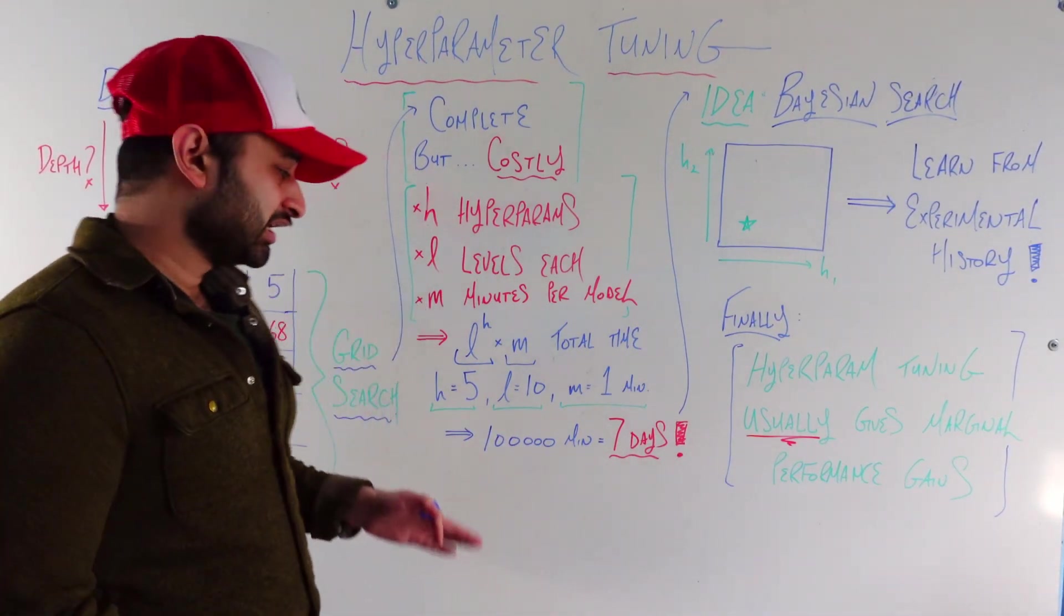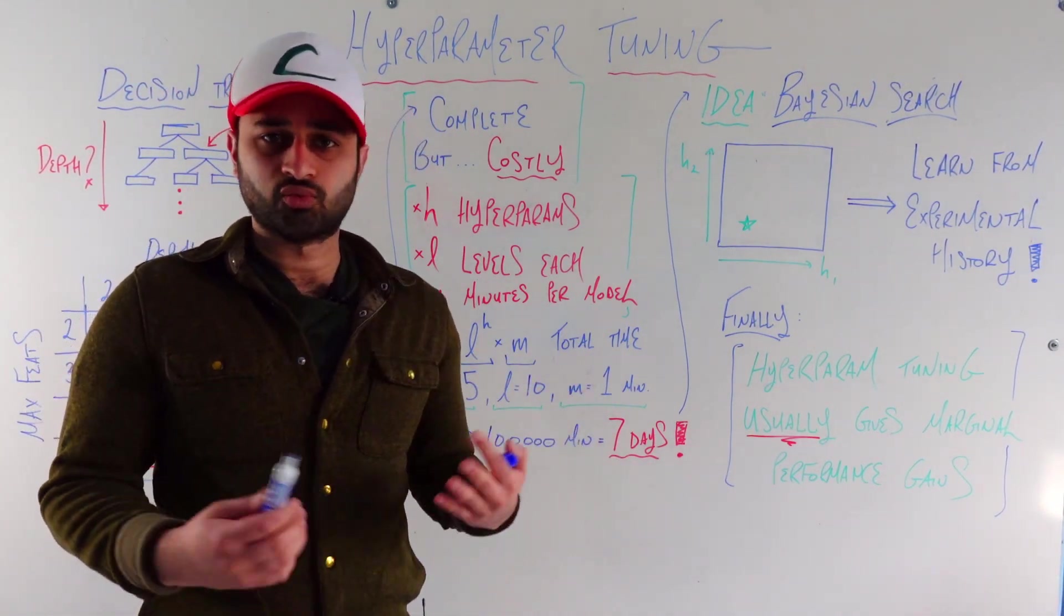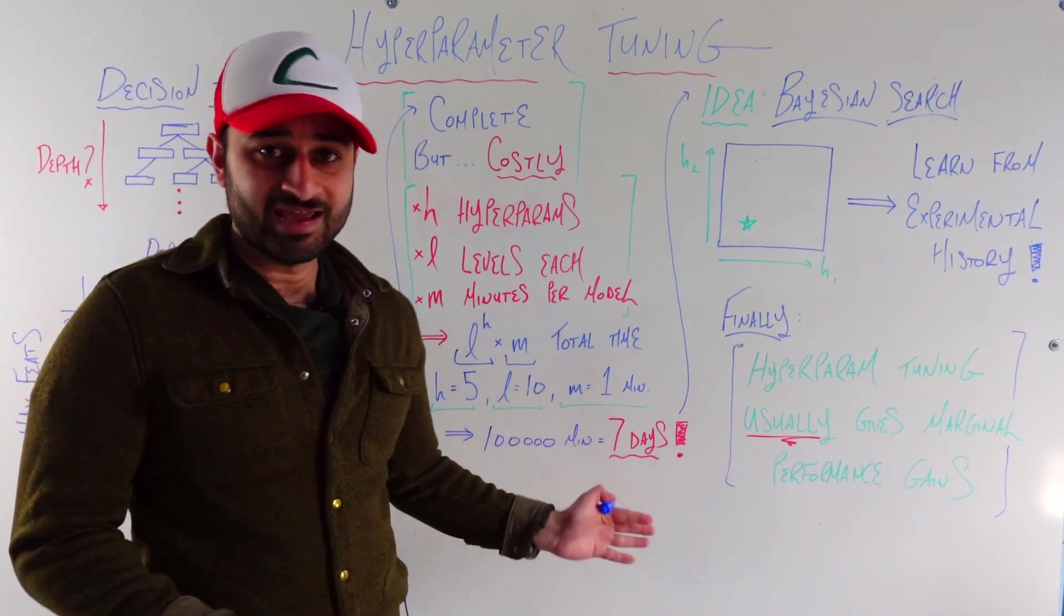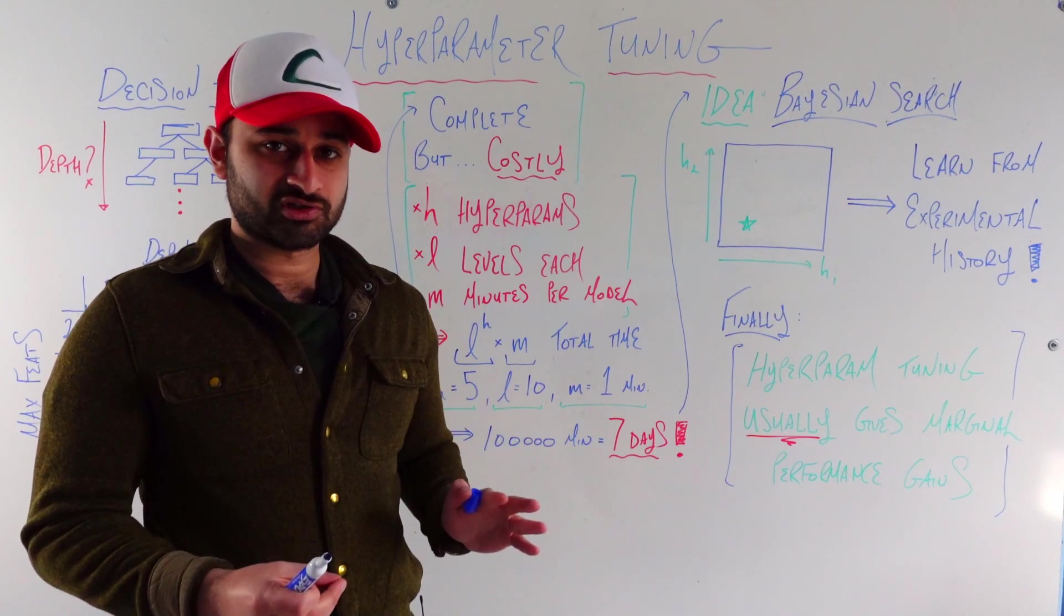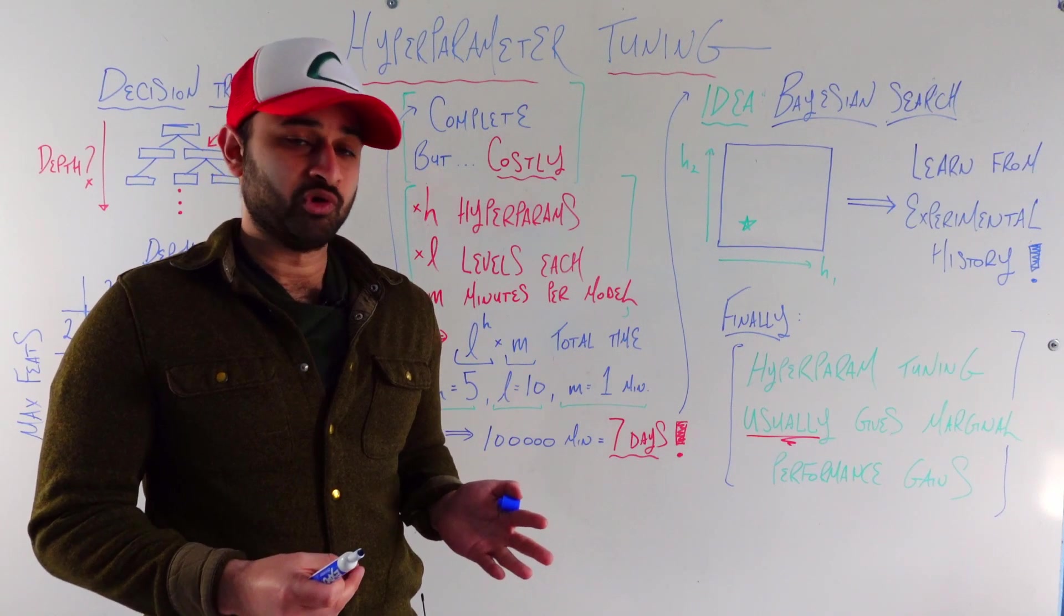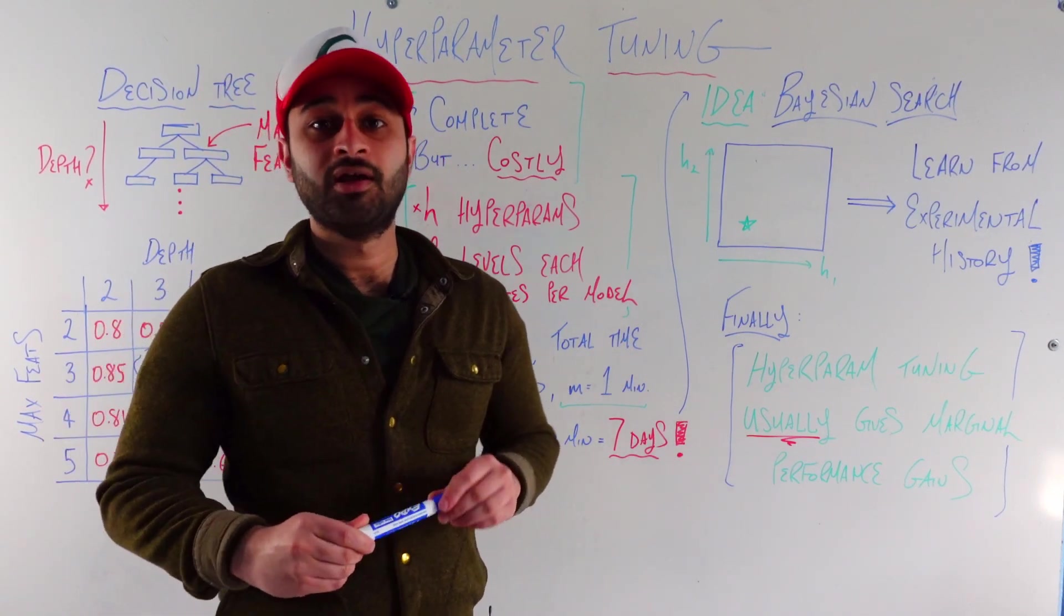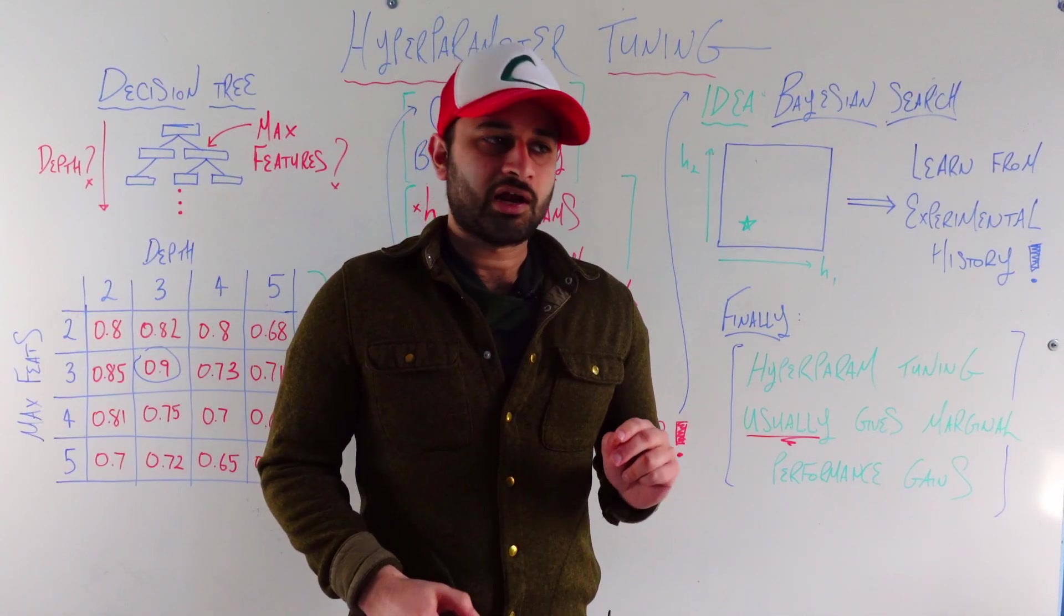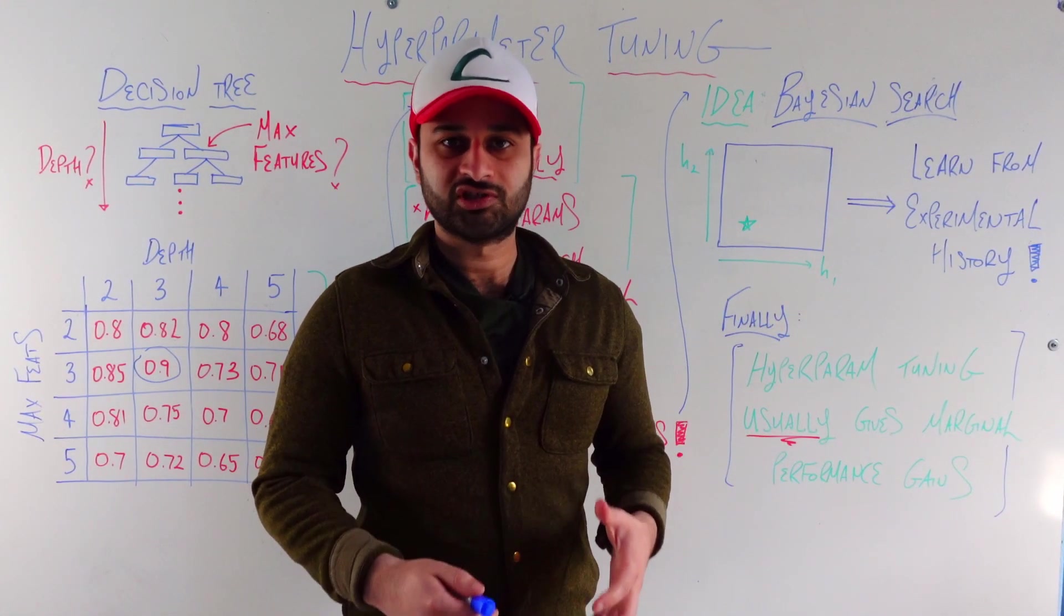Let's put in some real numbers. Let's say we have 5 hyperparameters, 10 levels each, and each model just takes 1 minute to train. The total amount of time, if you multiply that out, is going to be 7 days worth of computing time. So you're sitting there waiting a week to get the results. And let's say you figure out in the middle of that you made some kind of mistake, boom, got to start over. So this is obviously not the best way to go about hyperparameter tuning. And so let's talk about a smarter method, and that also allows us to bring in some different places of stats, specifically Bayesian statistics.